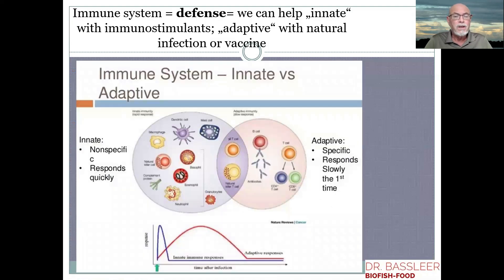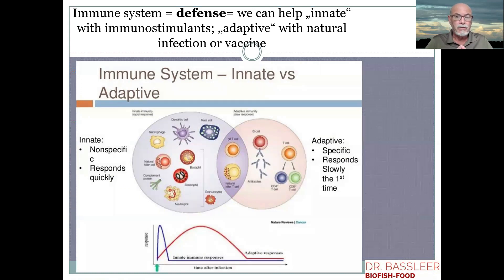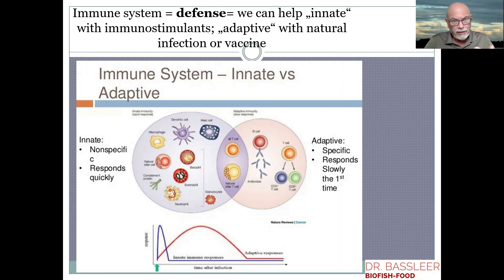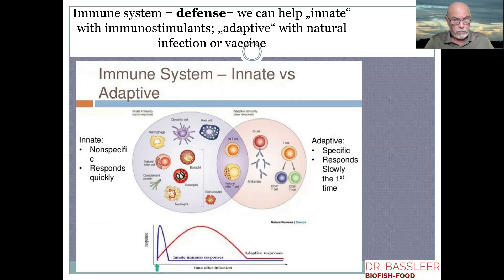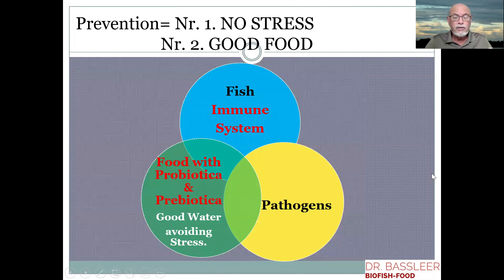A working immune system can prevent fish from infections and prevent the need for medications — that's all we want: a healthy fish, not one needing constant treatment. The immune system has two parts: the innate immune system and the adaptive immune system. The innate immune system can be supported with immunostimulants in fish food. The adaptive immune system learns to deal with infections and can take a couple of weeks before working efficiently.